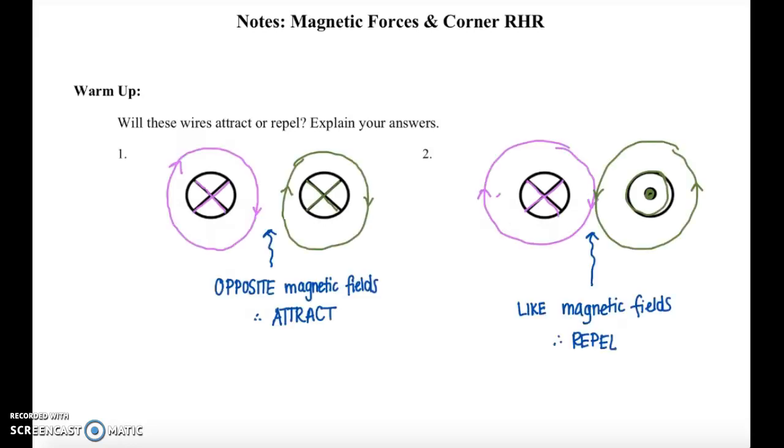Okay, to check your answers, number one should be attract, and number two should be repel. I used a similar method for both of these. I did the curl right-hand rule, remembering that an X is into the page and a dot is out of the page. That curl right-hand rule helped me determine the magnetic field that's created by the current, and then I looked at the kind of center where the magnetic fields were interacting. If they were opposite magnetic fields, like in number one, we have the pink pointing down, the green pointing up, then they would attract, and if they were like magnetic fields in the same direction, such as in number two, where they're both pointing downwards, you would get repulsion.